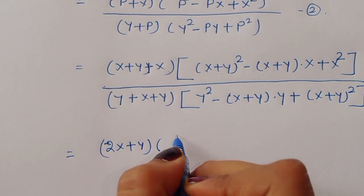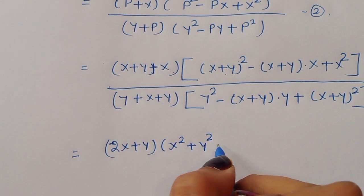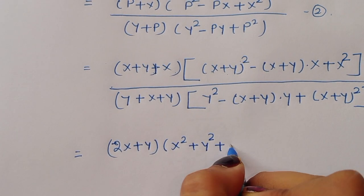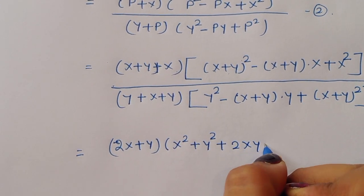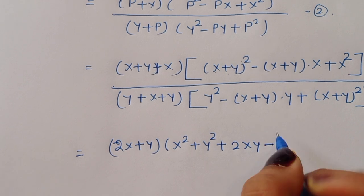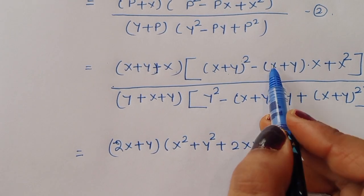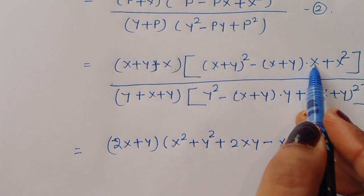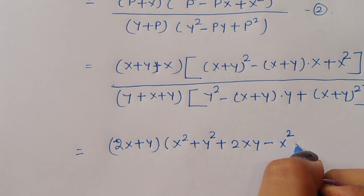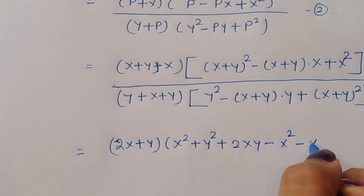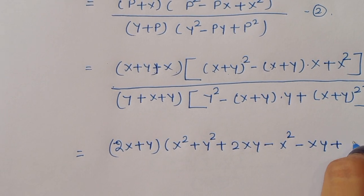Expanding the numerator: (2x + y) times (x² + y² + 2xy − x² − xy + x²), simplifying the bracket terms by cancelling x² − x² and combining −xy + 2xy = xy, leaving (x² + y² + xy).